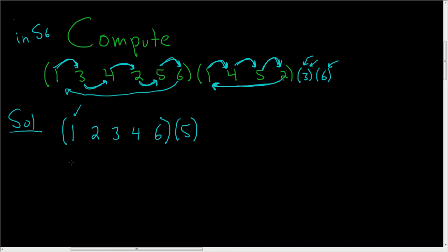So 5 is fixed, so we can write this as 1, 2, 3, 4, 6. And so that would be the product of these elements in S6.